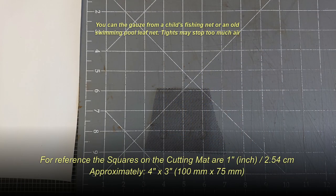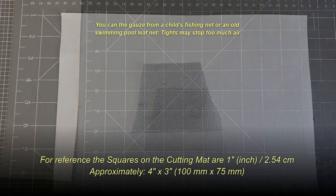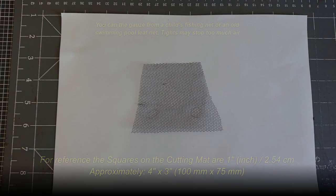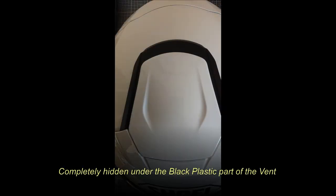The gauze needs to be cut to a rough triangular shape, as you can see here, as long as it can be hidden inside the vent of the helmet.